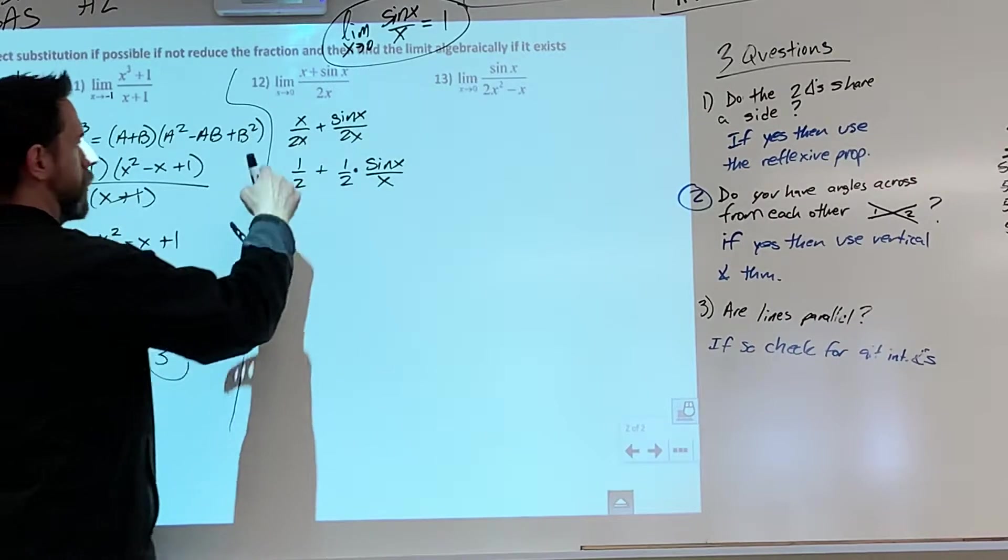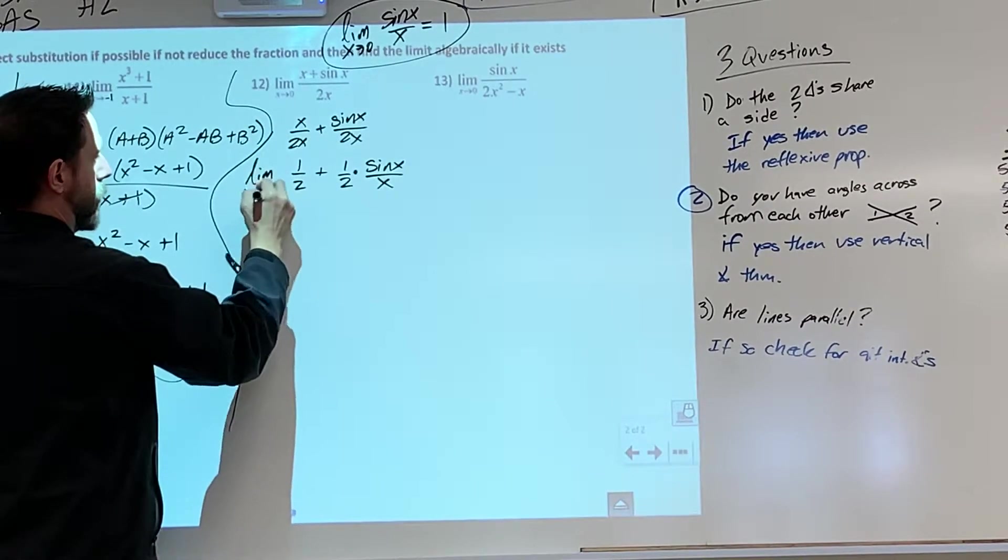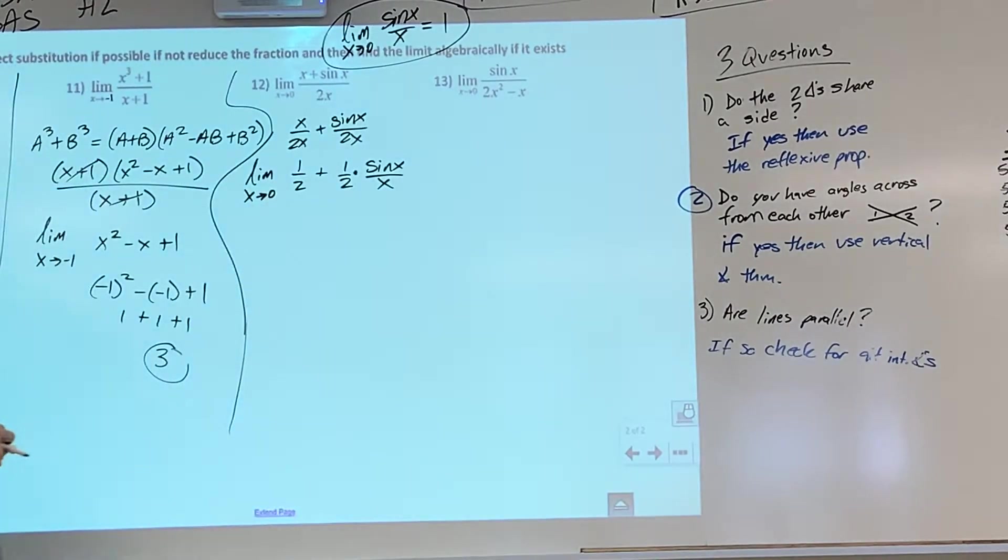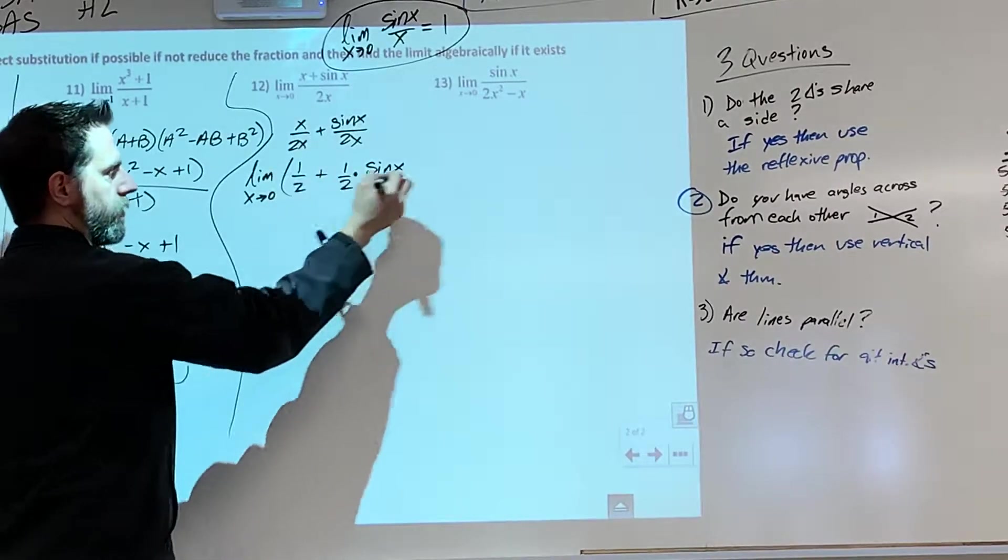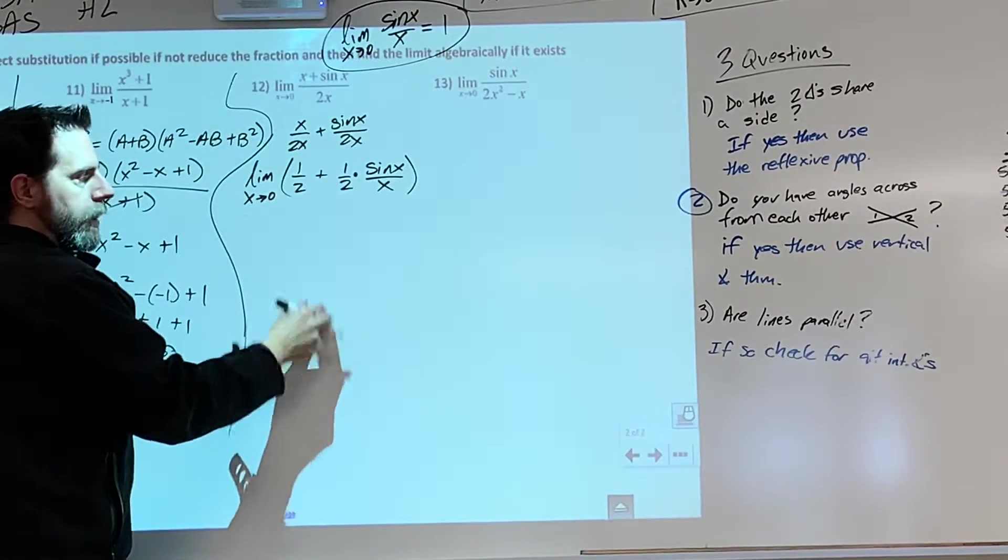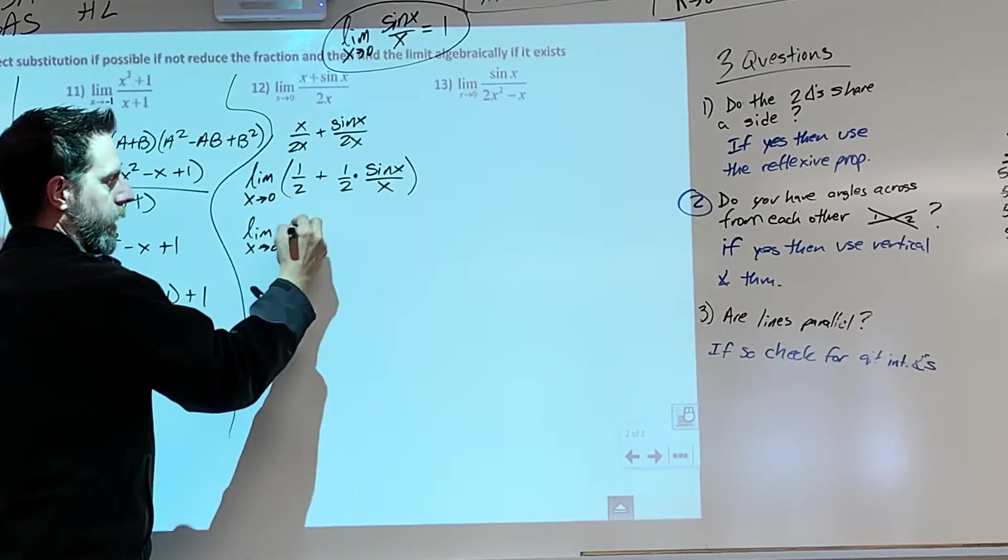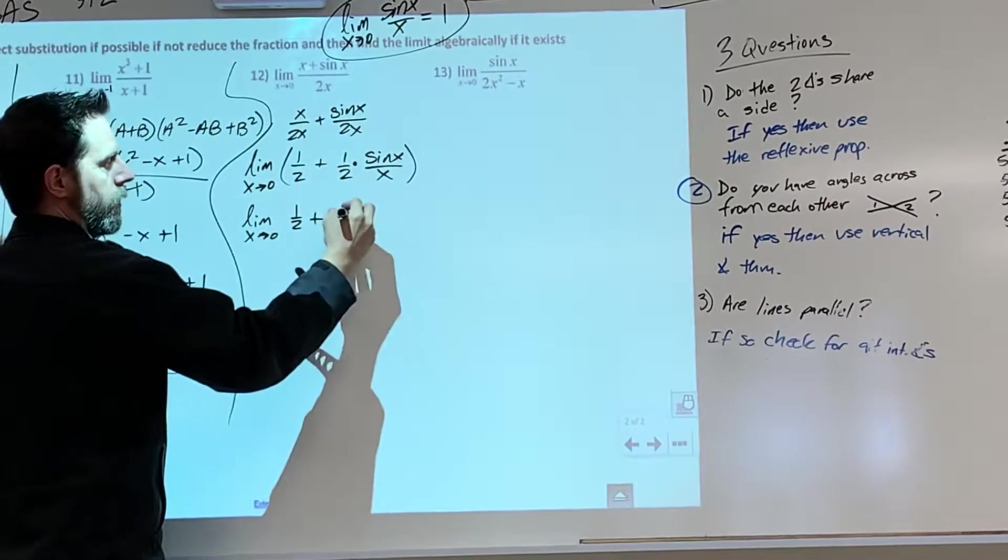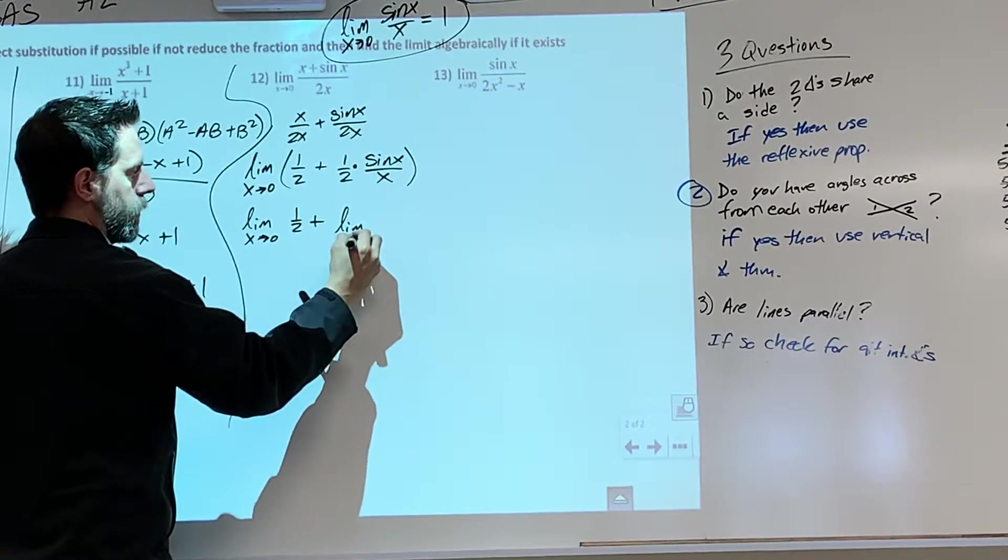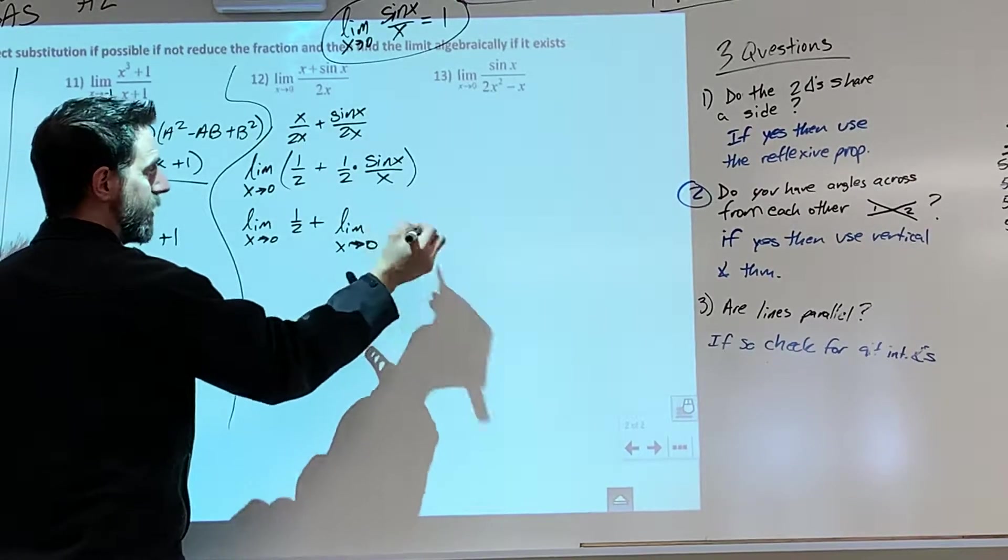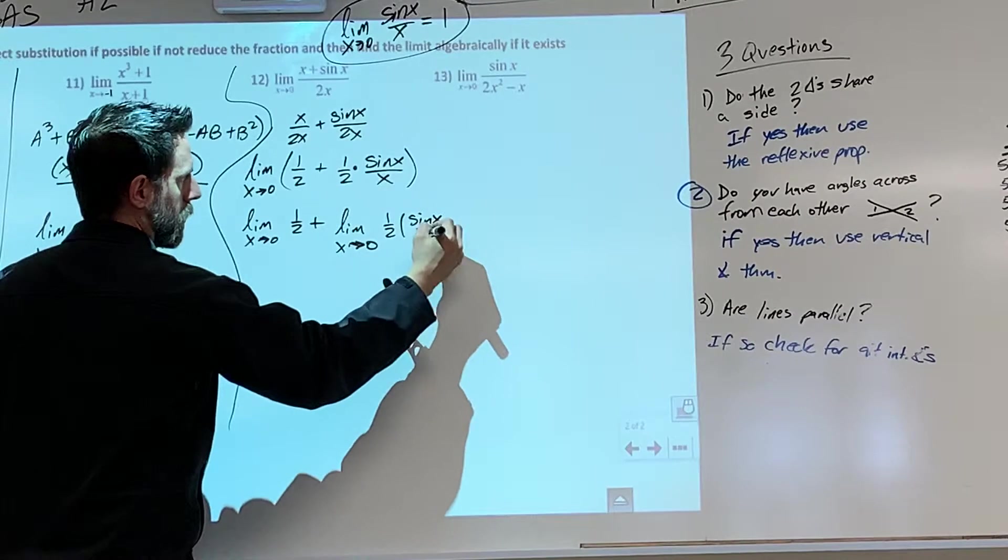Now remember when we talked about, we're still doing the limit right here. We're doing the limit as x approaches zero. We looked at that page and we saw that we could take the limit of all these different things right here individually. So this is the limit of still all that stuff right there. So now we're going to do the limit as x approaches zero of one half, plus we're going to do the limit as x approaches zero, basically one half times the separator.